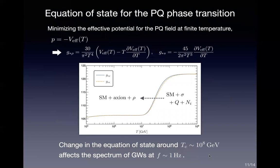We expect a change in the equation of state around this temperature, and we calculated it by minimizing the effective potential for the Peccei-Quinn field at finite temperature. This figure shows the results: the y-axis is the effective degrees of freedom and the x-axis is the temperature. There is a sharp change in the effective degrees of freedom at 10^8 GeV, due to the heavy fermions decoupling from the thermal bath by acquiring mass from the Peccei-Quinn field. This affects the spectrum of gravitational waves at those frequencies.